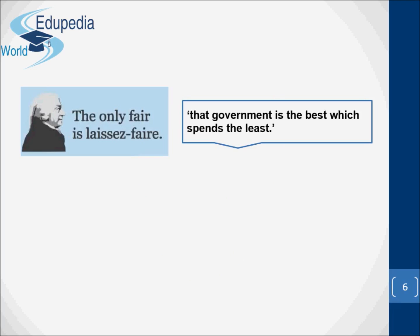In the laissez-faire era, the state was assigned a very limited role to play. The functions assigned to the state were based on the principle of least interference, or that government is the best which spends the least. According to the classical school led by Adam Smith, the functions of the state were restricted to justice, police, and arms. They considered government expenditure wasteful, and that money could be used much better by private persons than by the government.